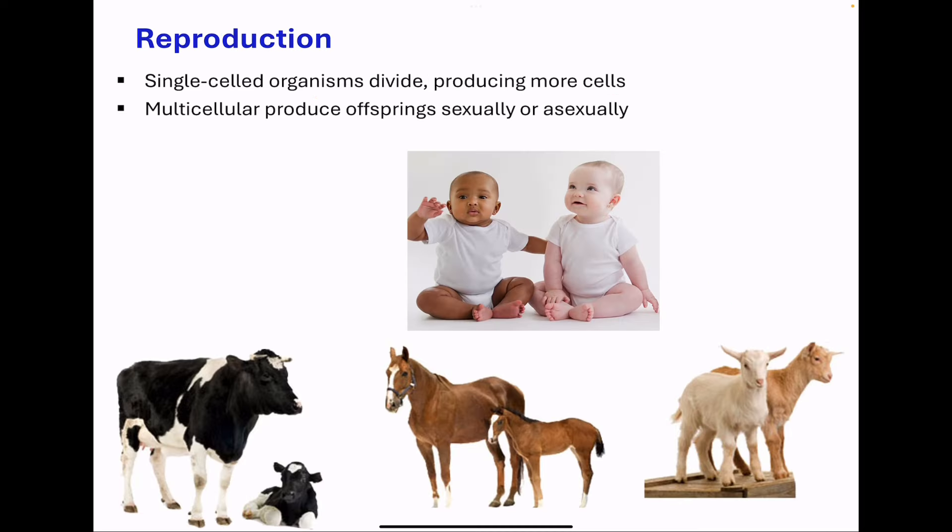Next, we go to reproduction. Single-celled organisms just divide, producing more cells. For example, in bacteria, we see binary fission, where one cell divides to produce two different cells. But multicellular organisms produce offspring. This could be through sexual reproduction or asexual reproduction. In sexual reproduction, there is exchange of gametes, meaning there is a male and a female. But in asexual reproduction, we produce offspring that are genetically identical to the parent.